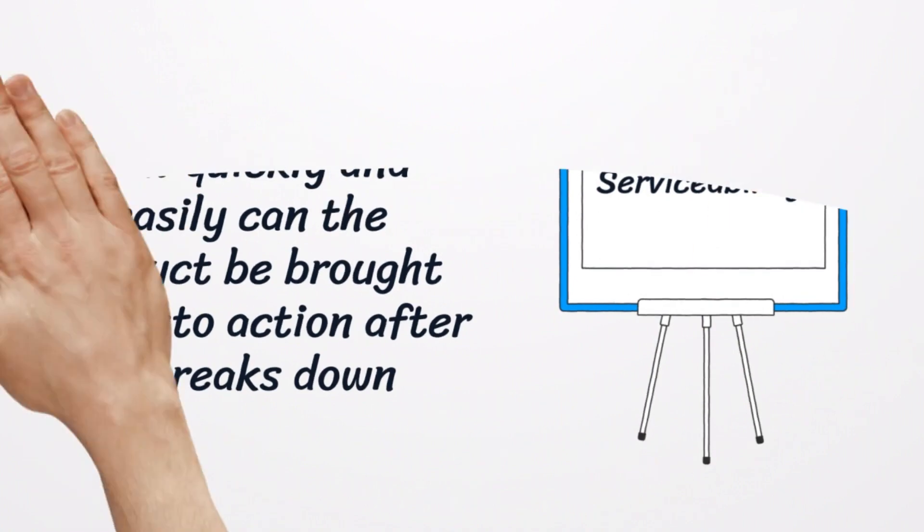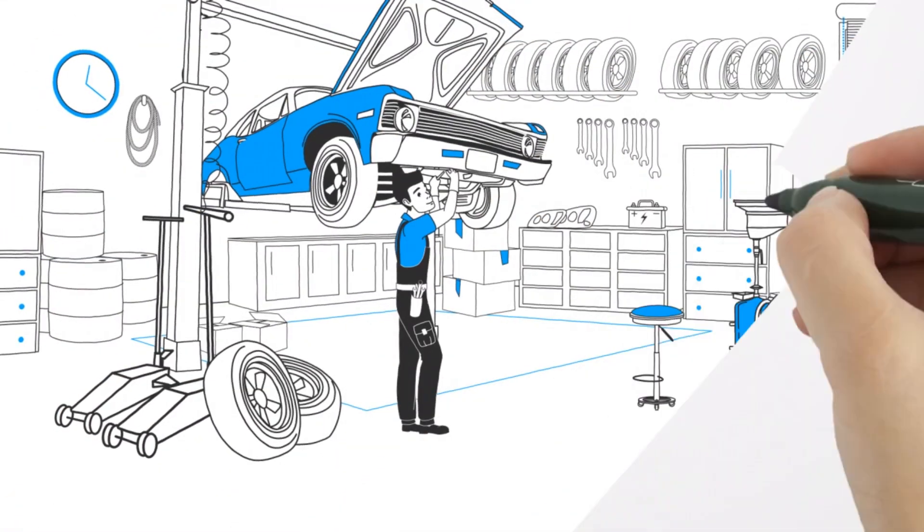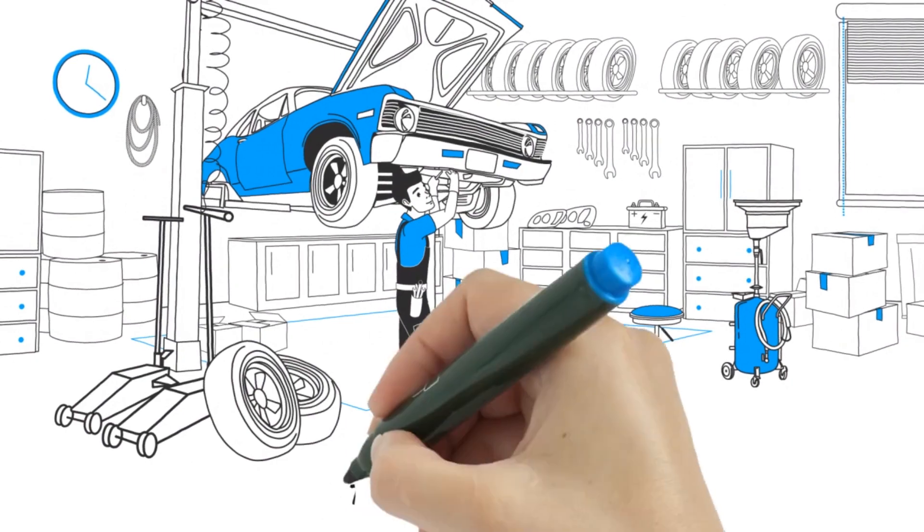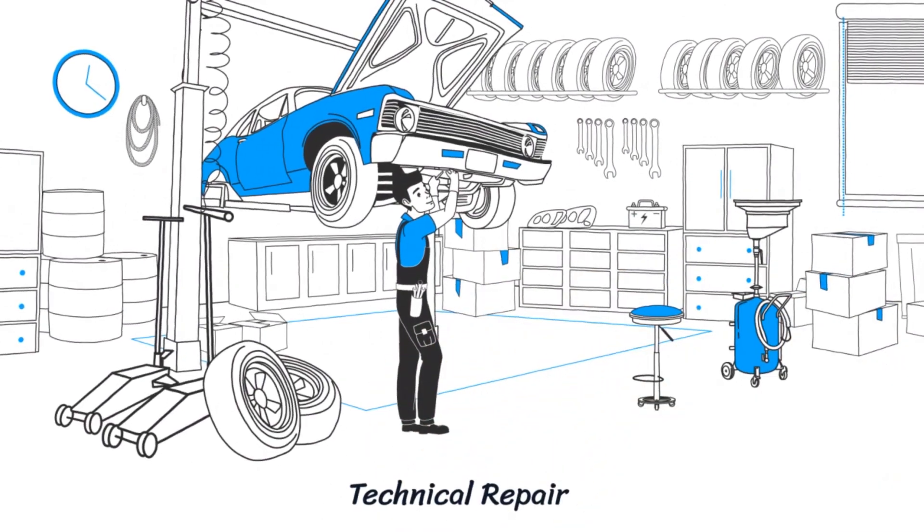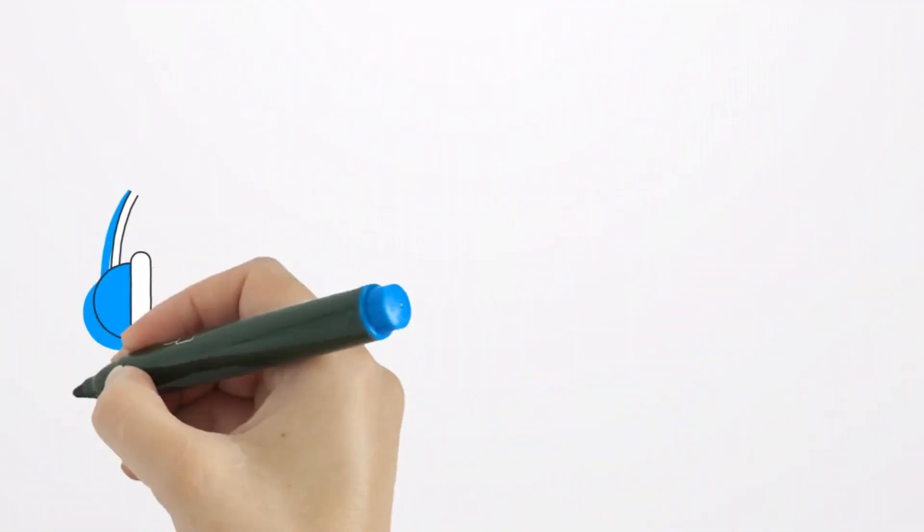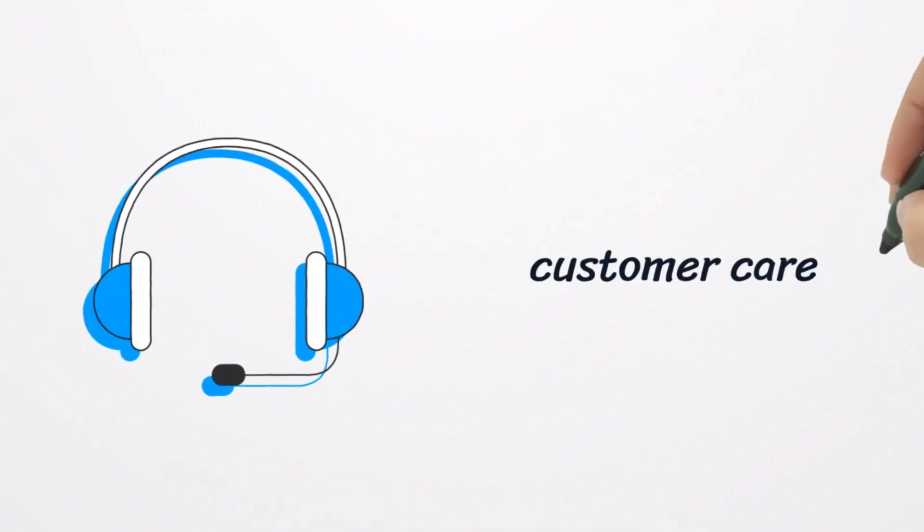Serviceability is the sixth dimension of quality. This dimension refers to how quickly and easily can the product be brought back into action after it breaks down. Here, Garvin considered both technical repair and how customer care and complaints are handled.